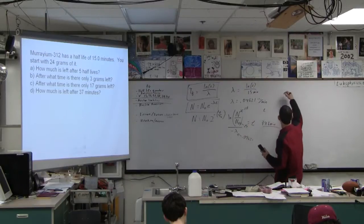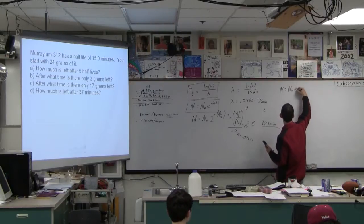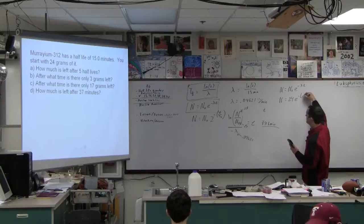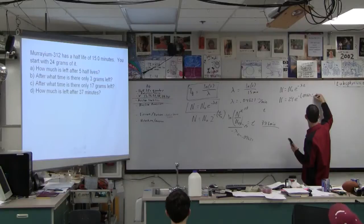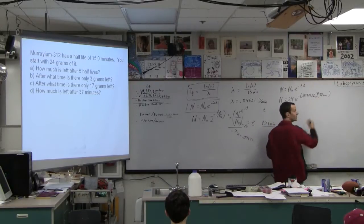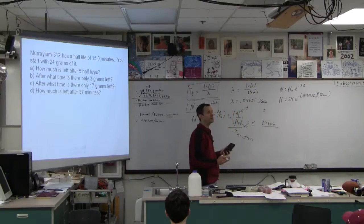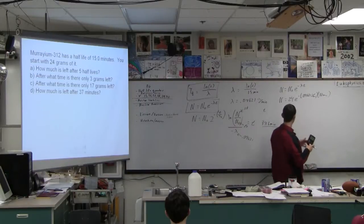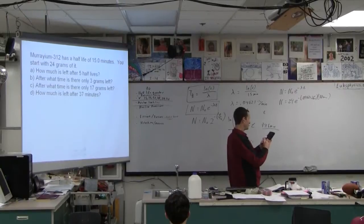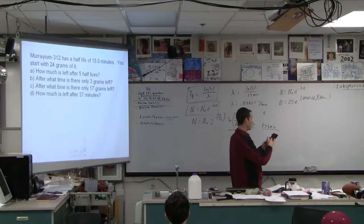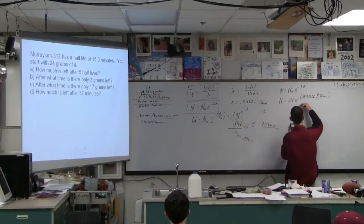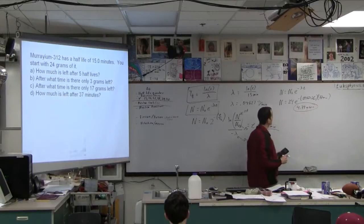And then the second one says, how much is left after 37 minutes? Well, for that one, we're just going to go N is N-naught, e to the minus lambda t. So N is 24 is what we start with, e to the minus .04621, this is per minute, times 37 minutes. Notice that the minutes cancel, and so we're just fine. I could have turned this into seconds, turn that into seconds, it still would work. So 24 times e to the parentheses, negative .04621 times 37, and you get 4.34 grams.